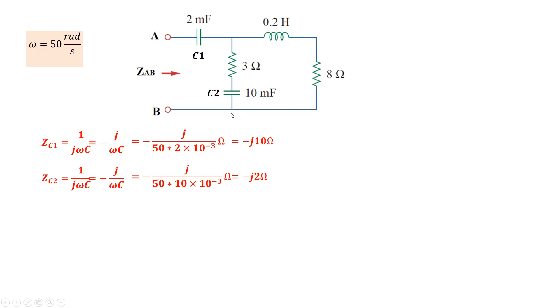For the case of the inductor, the impedance is given as jωl. Omega is 50, and l is 0.2, so that leads us to an impedance of j10 ohms.